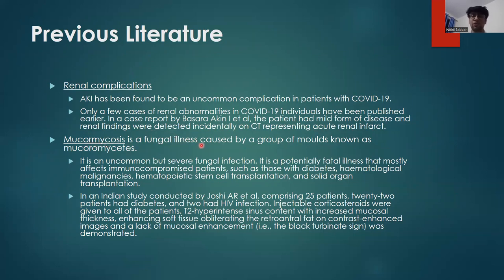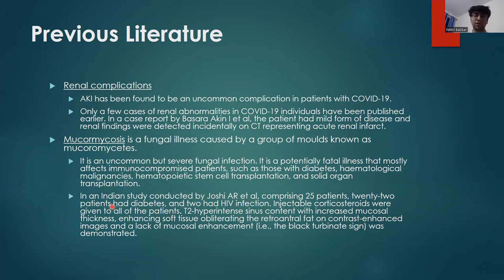Regarding mucormycosis, it is a fungal illness caused by a group of molds known as mucormycetes — an uncommon but severe fungal infection. It is a potentially fatal illness that mostly affects immunocompromised patients, including those with diabetes, hematological malignancies, history of hematopoietic stem cell transplantation, or solid organ transplantation, as well as those on corticosteroid therapy. In an Indian study by Joshi Ayer et al. comprising 25 patients, 22 had diabetes and two had HIV infection. Injectable corticosteroids were given to all patients, and findings included T2 hyperintense sinus contents with increased mucosal thickness, enhancing soft tissue, and the black turbinate sign.